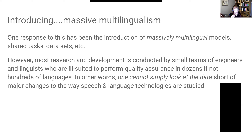I think the problem is the following: most research and development is conducted by small teams of engineers and/or linguists who are ill-suited to perform quality assurance in dozens, if not hundreds, of languages. Even if you try to gather a linguistically diverse team, it's hard to get much better than a couple of people per language. Say you get six people — maybe you can get a dozen languages, maybe 15, but certainly you'll never get to 100 with a dozen people. One cannot simply look at the data short of major changes to the way in which we develop these technologies. This is affecting the quality of our work and our ability to generalize about how these technologies generalize to new languages.